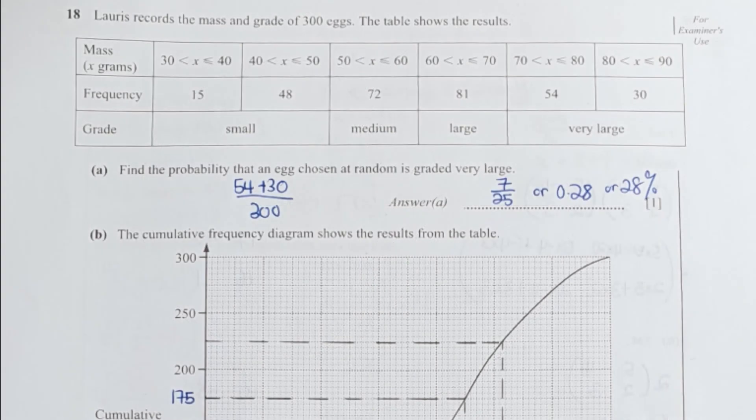For question 18, find the probability that an egg chosen is graded very large. So those who are in very large category will be 54 plus 30 over the 300 eggs. So your final result will be 28% or 7 over 25.